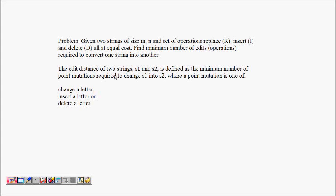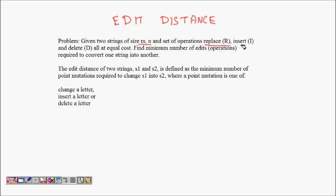In this lecture we are going to learn about a problem known as edit distance. You are given two strings of size M and N, and a set of operations: replace one character, insert a character, or delete a character — all of equal cost. The goal is to find the minimum number of edits or operations required to convert one string to another.